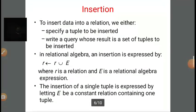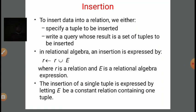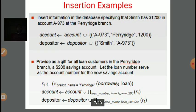The next operation is insertion. In insertion, we require inserting some data into a relation — either specifying a tuple to be inserted, or writing a query whose result is a set of tuples to be inserted. In relational algebra, an insertion is expressed by a union or addition expression: R ← R ∪ E, where R is the relation and E is the relational algebra expression. The insertion of a single tuple is expressed by letting E be a constant relation containing one tuple only. For example, insert information specifying that Smith has $1200 in account A9973 at the Paris branch.